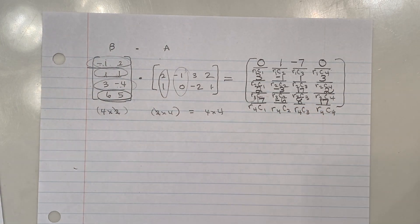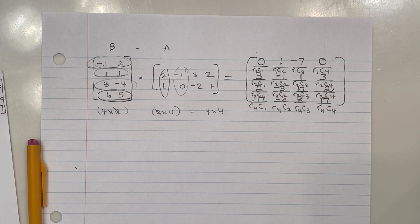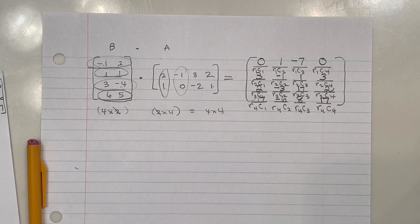We've looked at different matrix operations: adding and subtracting with the same-order requirement, scalar multiplication — the easiest multiplication — and matrix multiplication between two matrices with the necessary column-equals-row requirement.